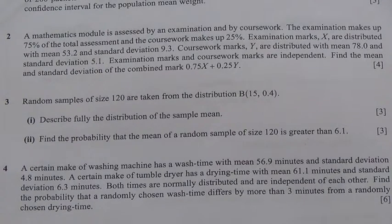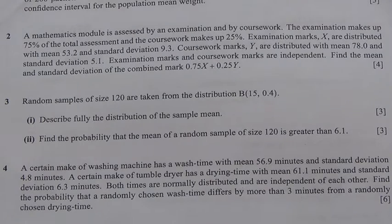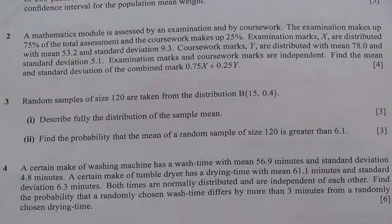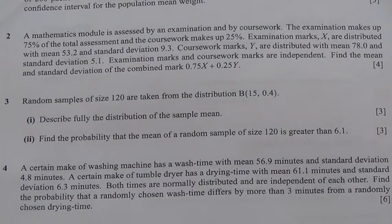Hi, this is question number 3, taken from June 2006 Advanced Level Maths, HSC Statistics 2. Random samples of size 120 are taken from the binomial distribution with n=15 and p=0.4. Describe fully the distribution of the sample mean, and also find the probability that the mean of a random sample of size 120 is greater than 6.1.